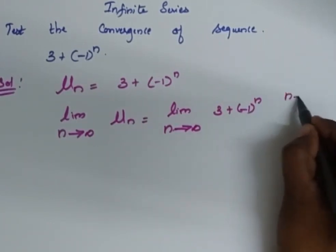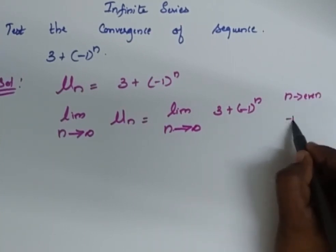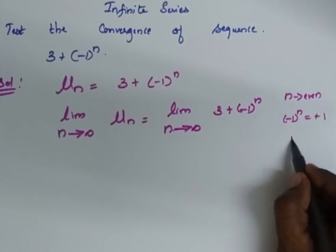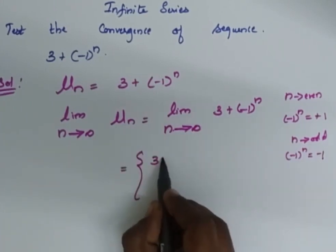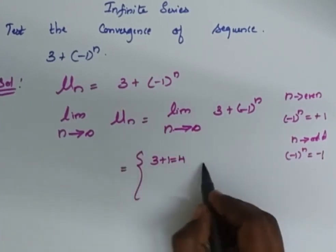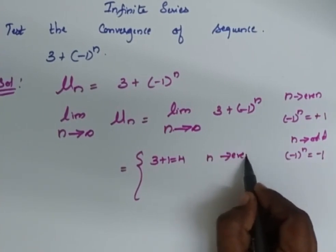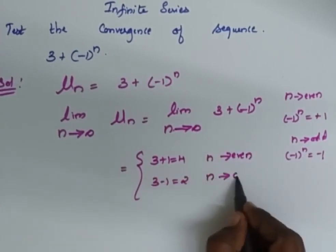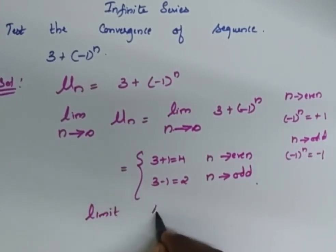When n is even, (-1)^n = +1, so u_n = 3 + 1 = 4. When n is odd, (-1)^n = -1, so u_n = 3 - 1 = 2. Since the sequence takes two different values depending on whether n is even or odd, the limit is not unique.